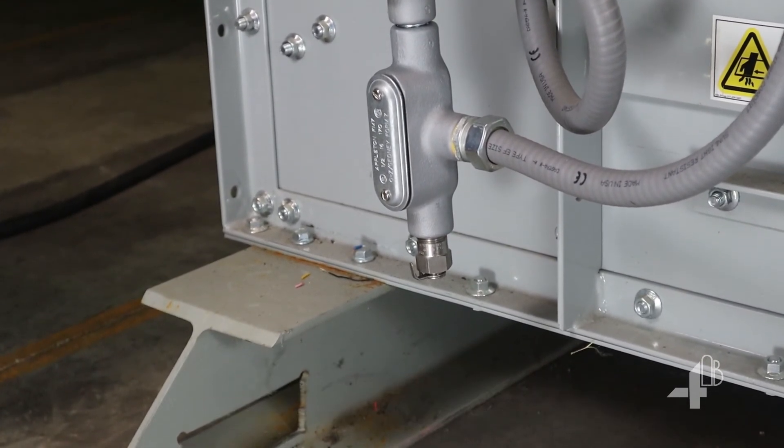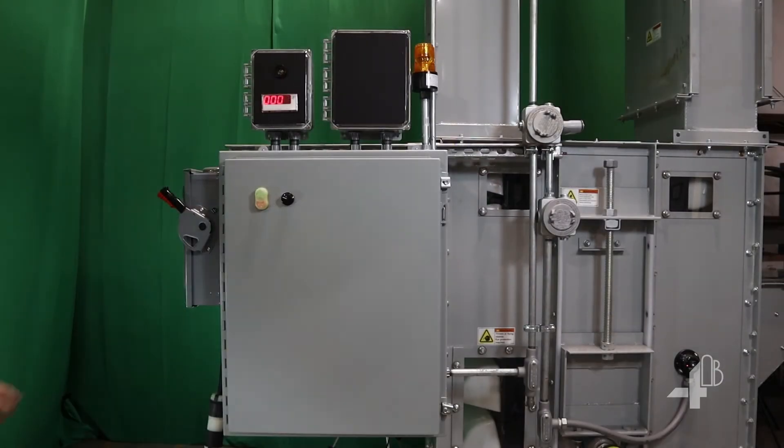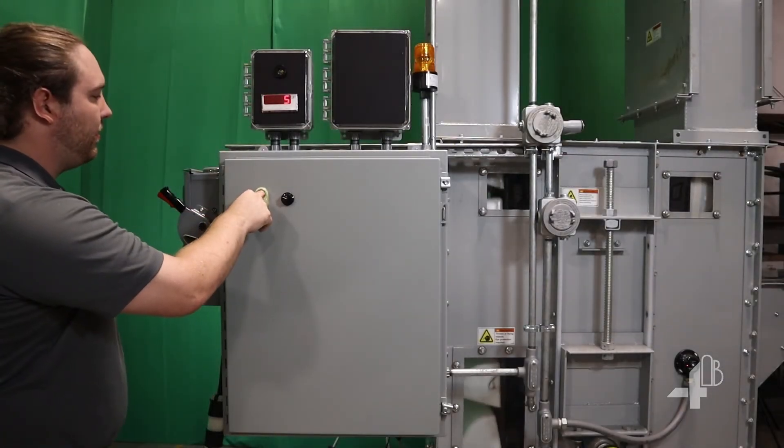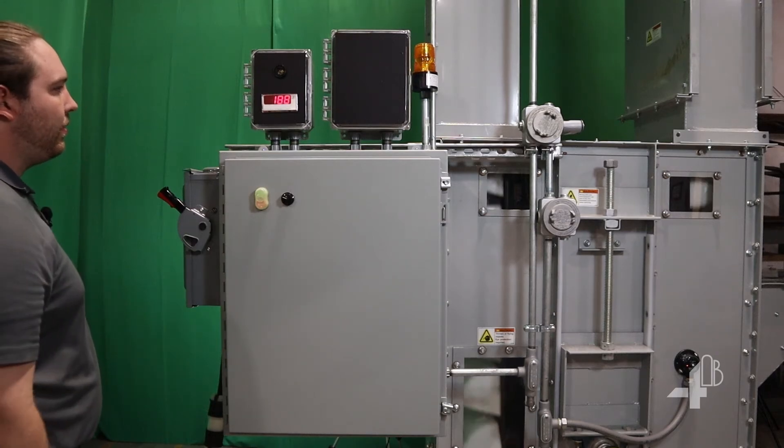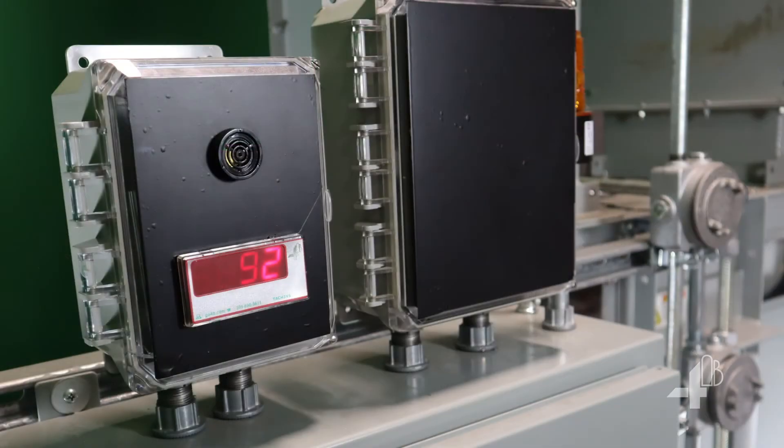The alarm wire should be connected to an audible and visual alarm. The shutdown wire should be connected to the motor starter. The optional display cables can be connected to show shaft speed.